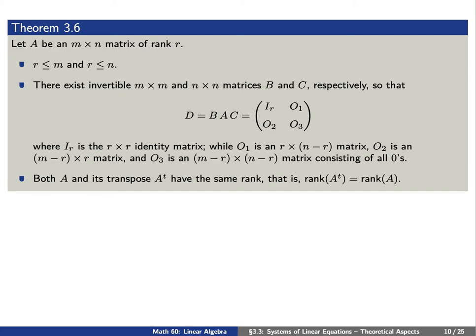We can find matrices B and C such that B times A times C is a particularly nice matrix — that is, the matrix has zeros everywhere except for R ones along the diagonal. Here we can think of those R ones as forming the identity matrix I_R, an R by R identity matrix.